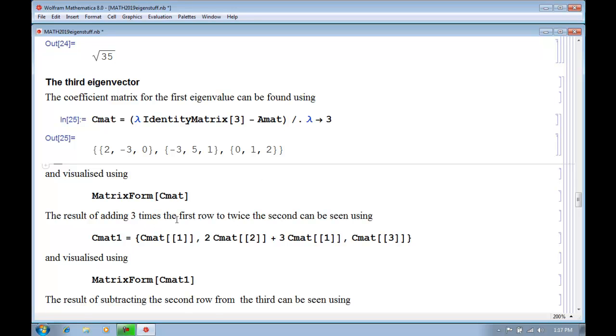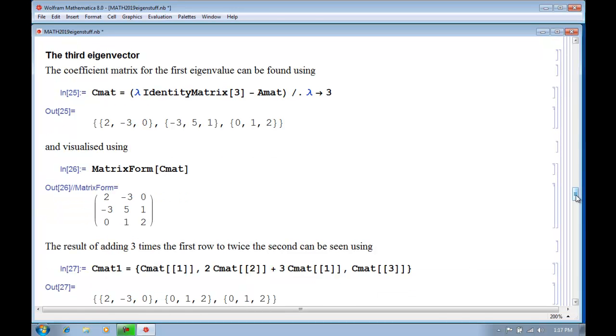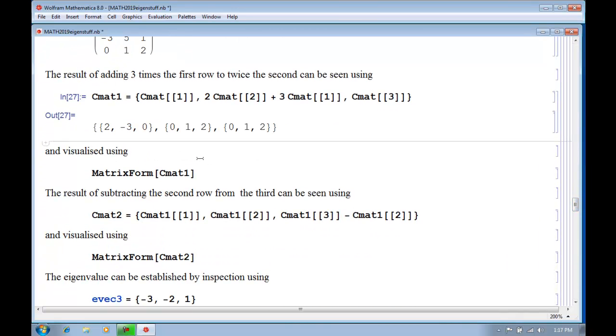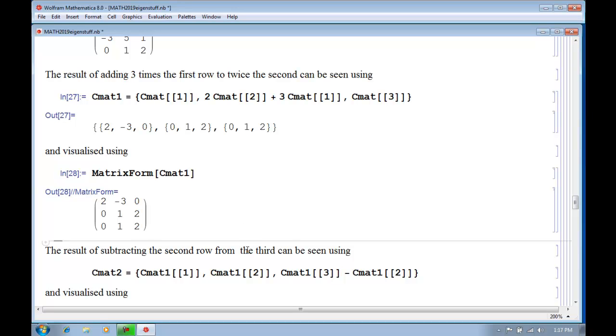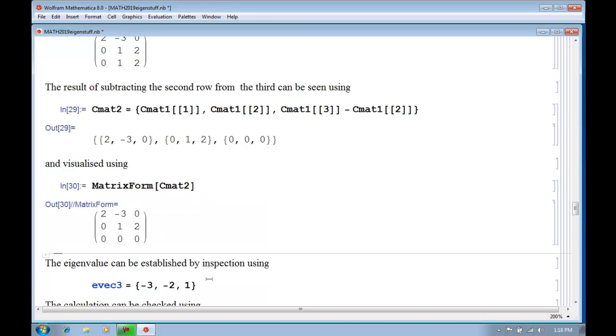So we do all this. So we've got 0s in the first column. And we can see that if we subtract the second row from the third row, we'll get 0s there. And we can check using that. And we see that it's all good.